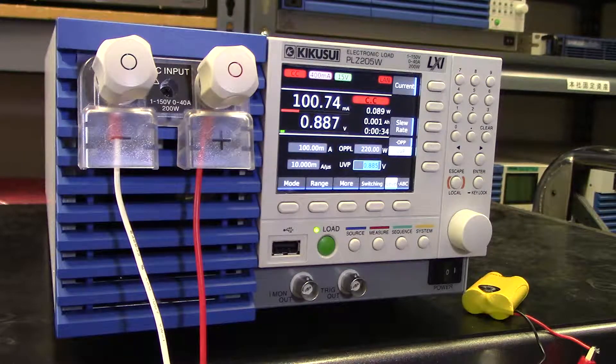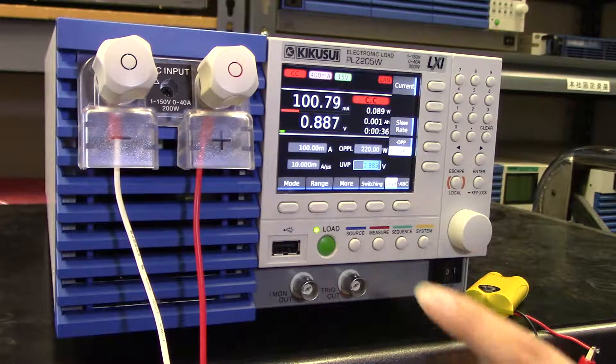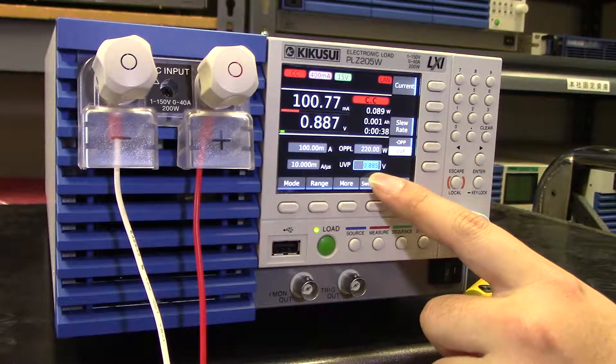So for this test, we've set the UVP to 0.885. So it should stop here shortly.